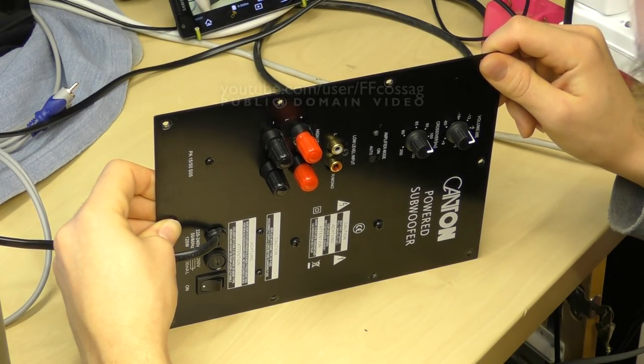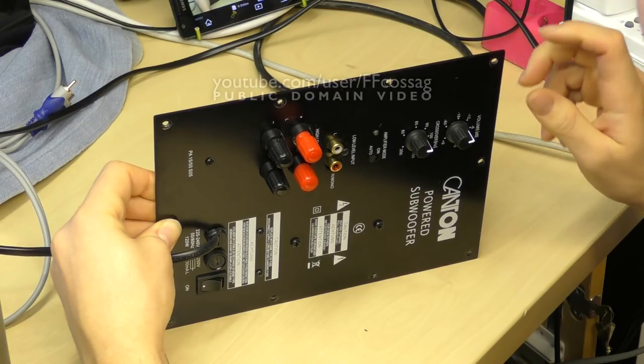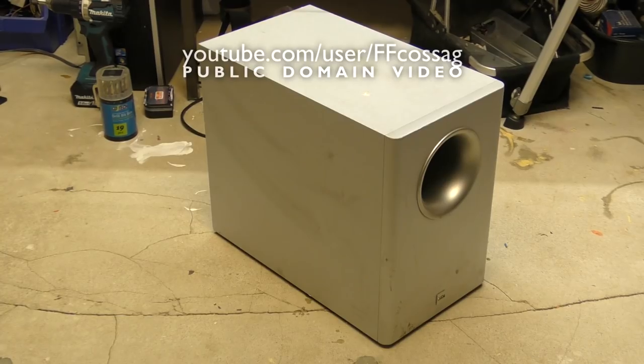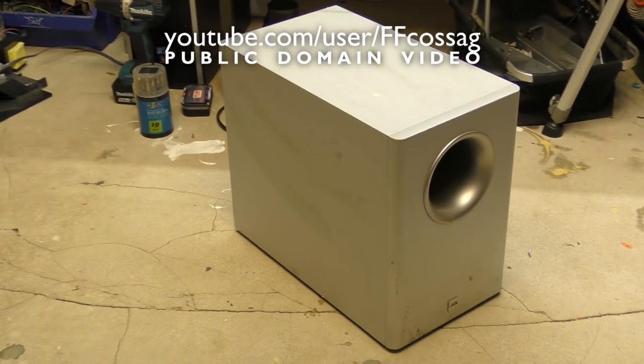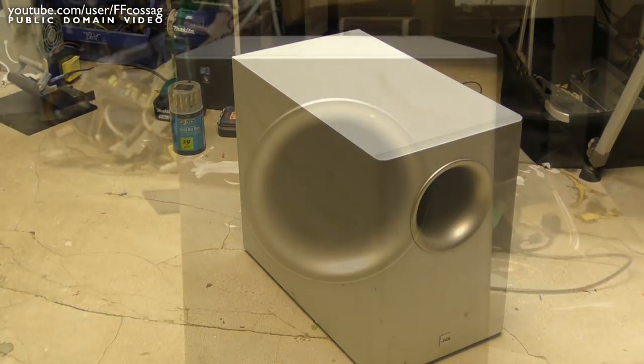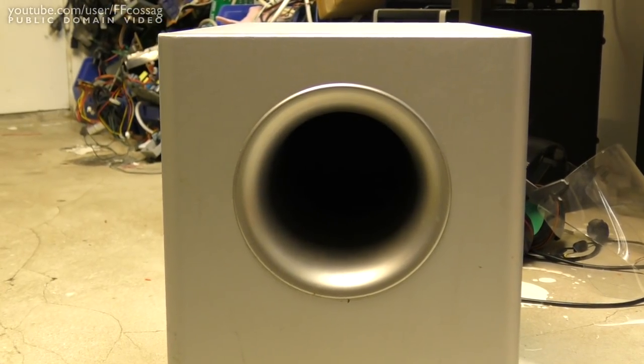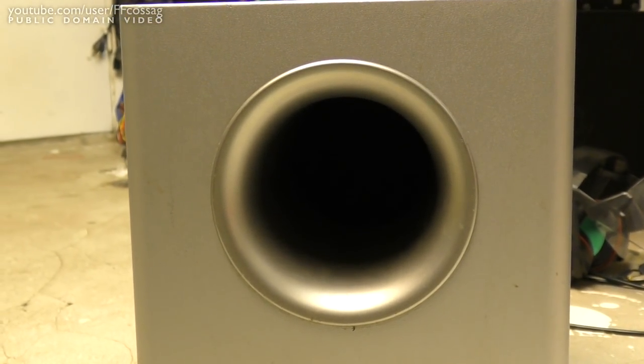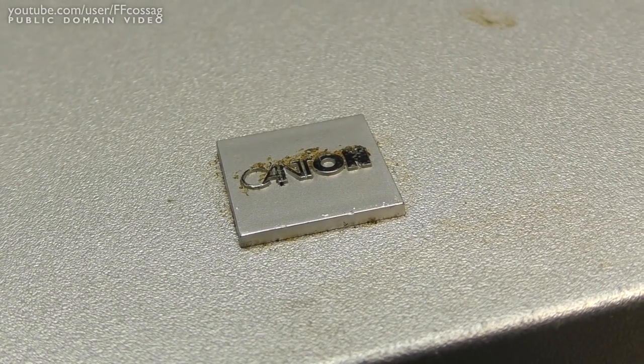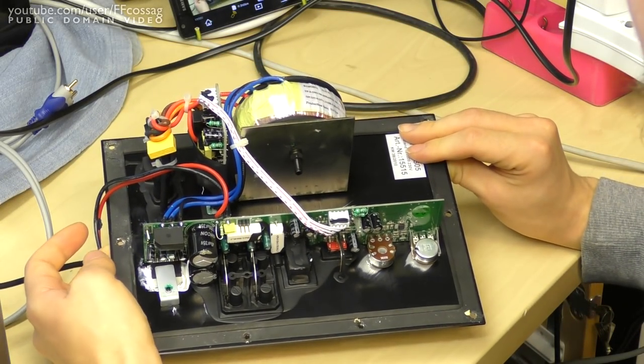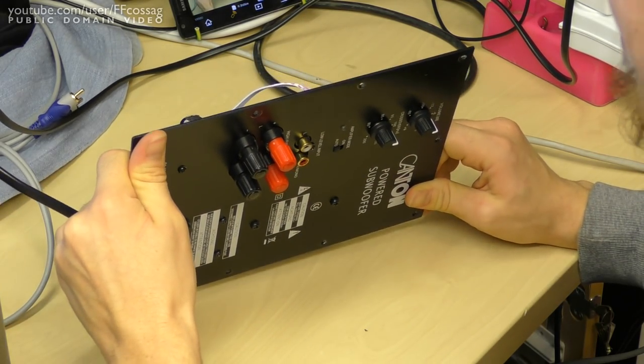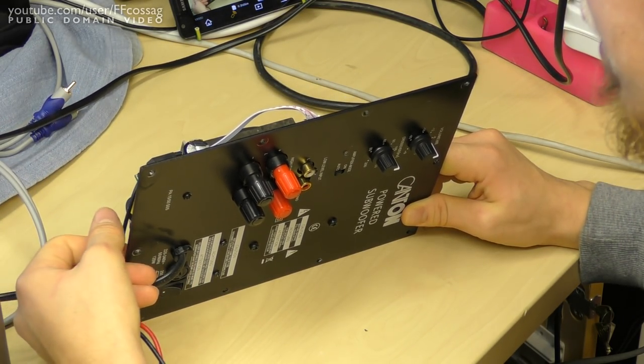Today on the lazy subwoofer repairs channel we have the power module out of a Canton AS15SC subwoofer. This is a tiny little thing. I think it has a 6-inch driver in a reasonably sized cabinet. It's one of those weird solutions where it's just a hole and the actual driver doesn't couple straight to the air, so it's probably going to be a boomy piece of trash. But it's broken and I'm lazy and I feel like getting a cheap kick out of getting this thing running. It's roughly $300 when new, though it certainly doesn't feel like it.